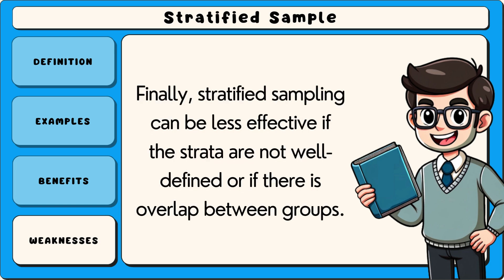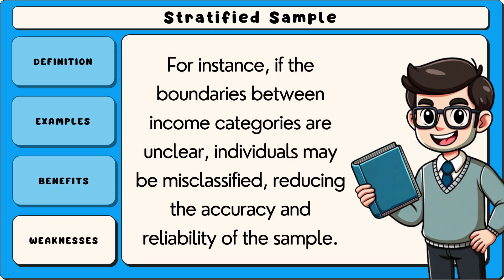Finally, stratified sampling can be less effective if the strata are not well defined or if there is overlap between groups. For instance, if the boundaries between income categories are unclear, individuals may be misclassified, reducing the accuracy and reliability of the sample.